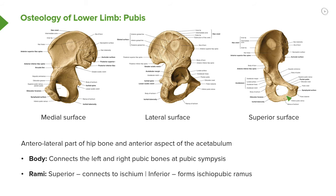With the help of the ischium, we can see the formation of the obturator foramen, where the superior pubic ramus and the inferior pubic ramus form this C-shaped part of the obturator foramen. The ischium then forms the more posterior aspect.